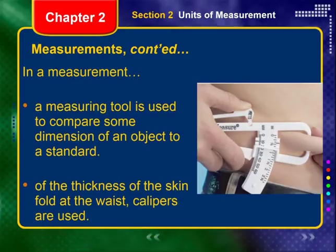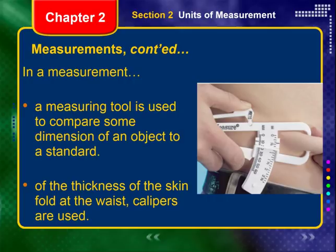In a measurement, a tool is used to compare some dimension — it could be length, volume, or mass. For example, the thickness of a skin flap at the waist is used to measure body fat. Calipers are the measuring tool, and the thickness of the skin fold is the dimension being measured — specifically, the length between two points of the calipers.